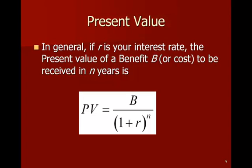The general equation for getting the present value is then very simple. If you get a benefit B at some point in the future, say N years down the road, you're going to take B divided by 1 plus R, where R is your discount rate. 10% would equal 0.1, 20% equals 0.2.